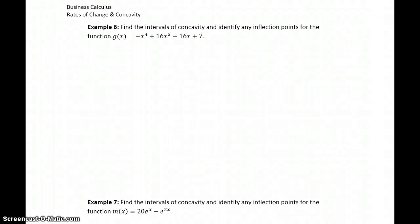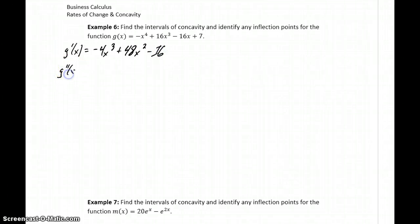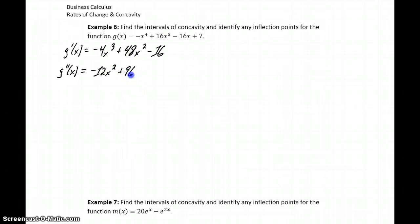Example 6 will start the same way. We need to find the first derivative of g(x), which in this case will be negative 4x cubed plus 48x squared minus 16. Then we need to find the derivative of the first derivative to get the second derivative, which will give us negative 12x squared plus 96x.